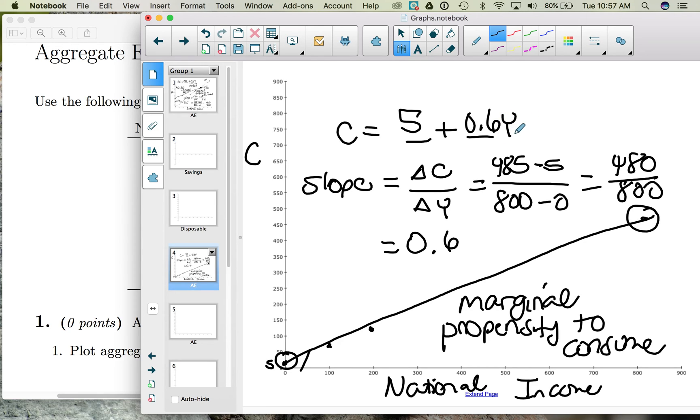This Y is a placeholder. So we could figure out the amount of consumption spending at different levels of income. So for example, we could say how much consumption spending is there at 200? And we would take 5 plus 0.6 times the 200.